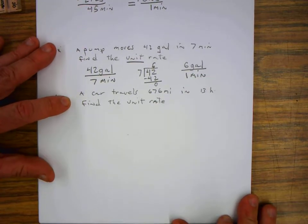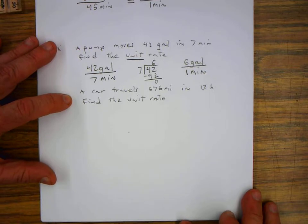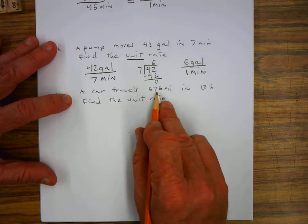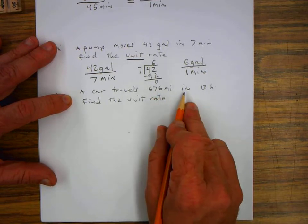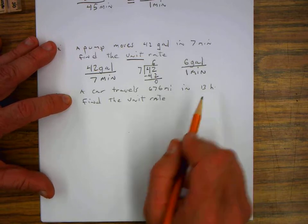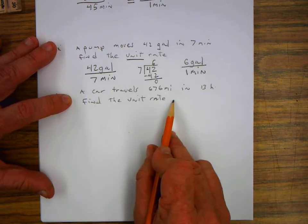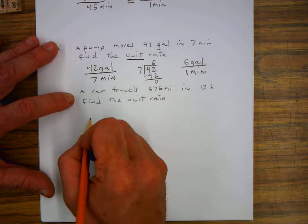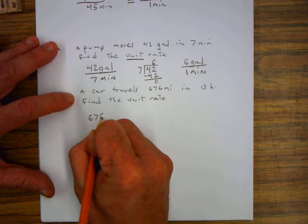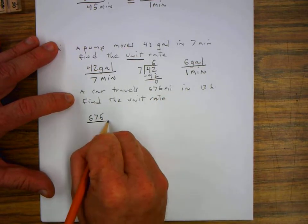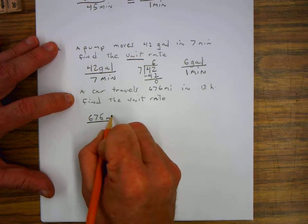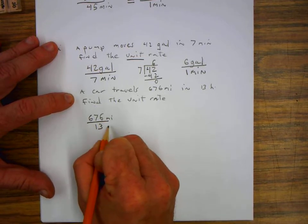On this next problem, a car travels 676 miles in 13 hours. Find the unit rate. So let's write this as a ratio, 676 miles in 13 hours.